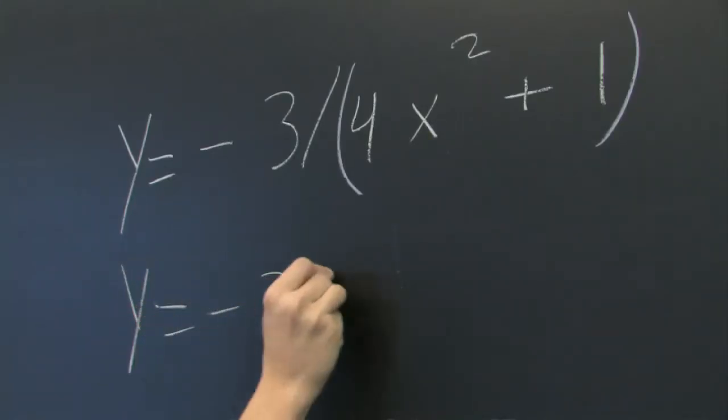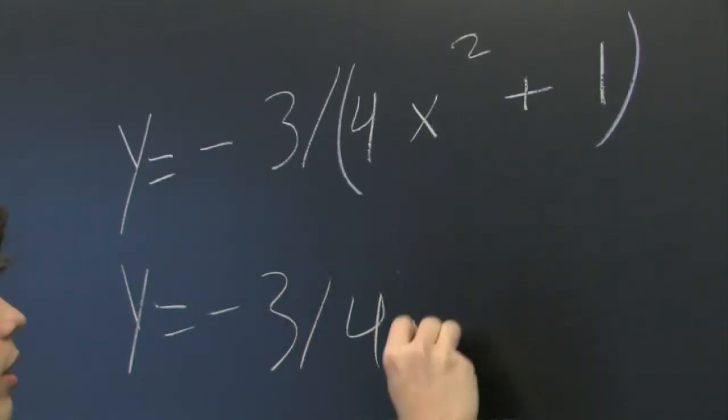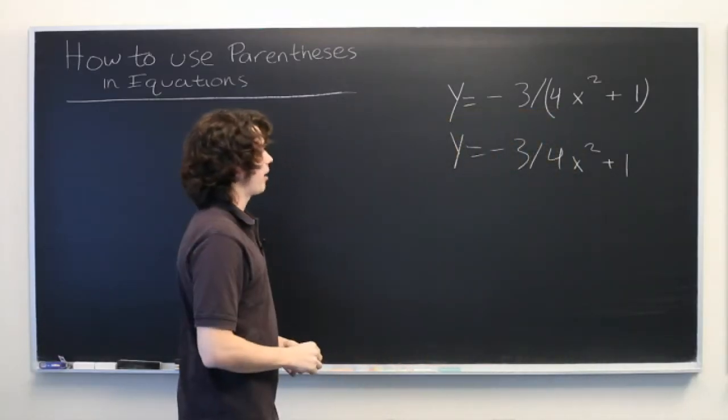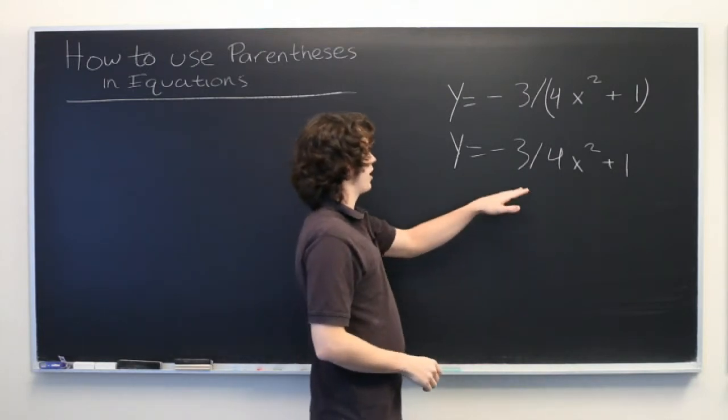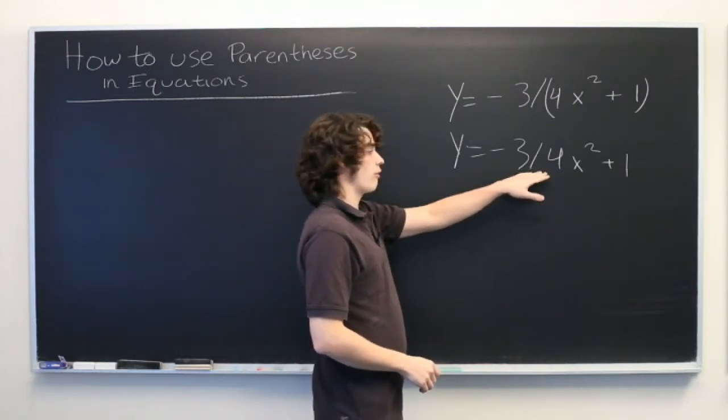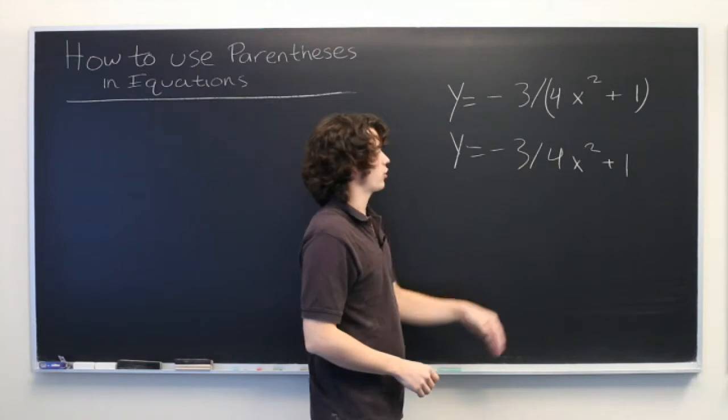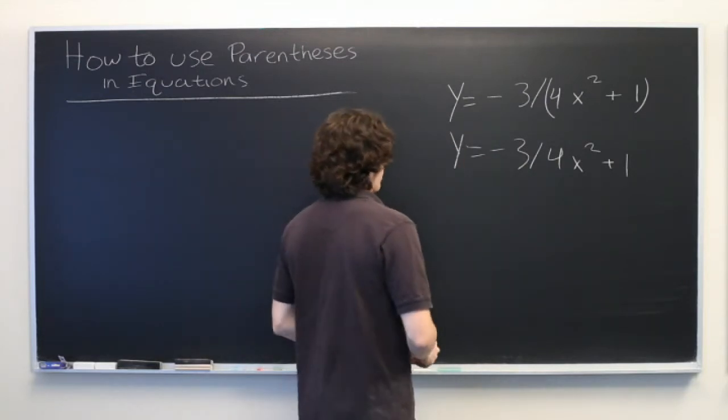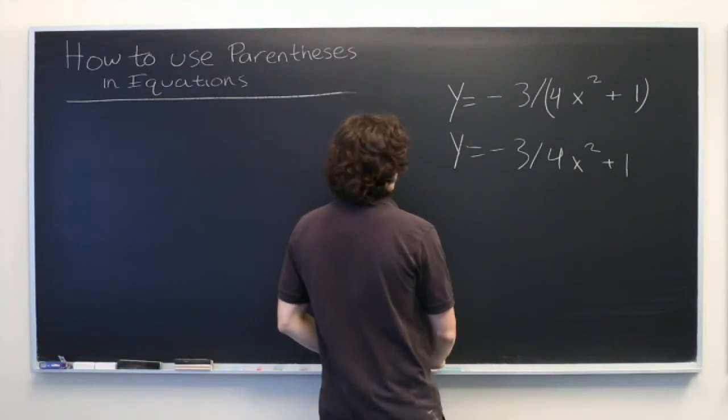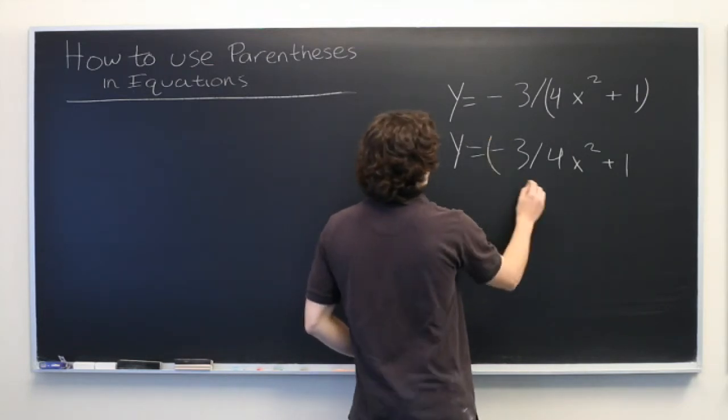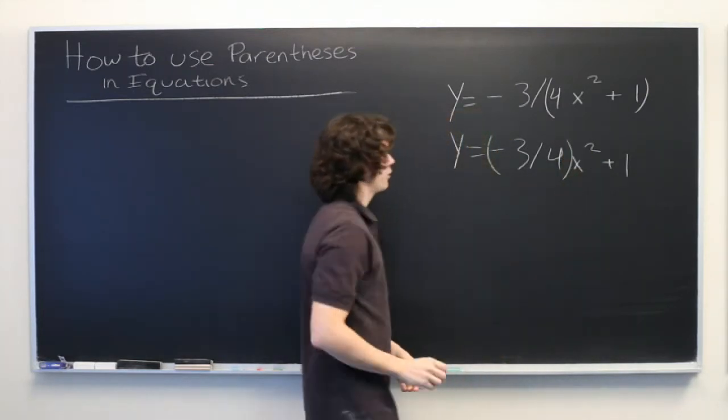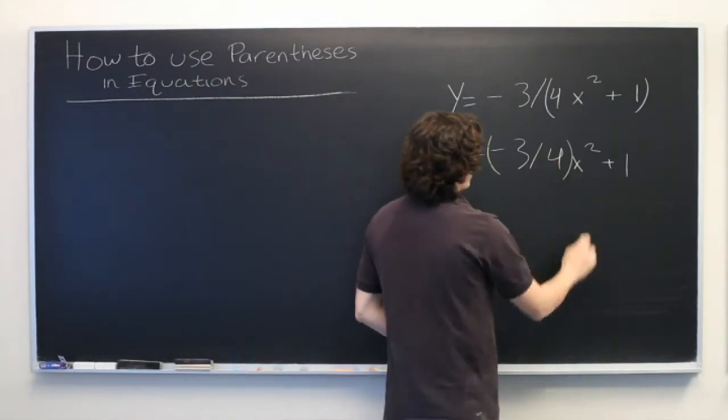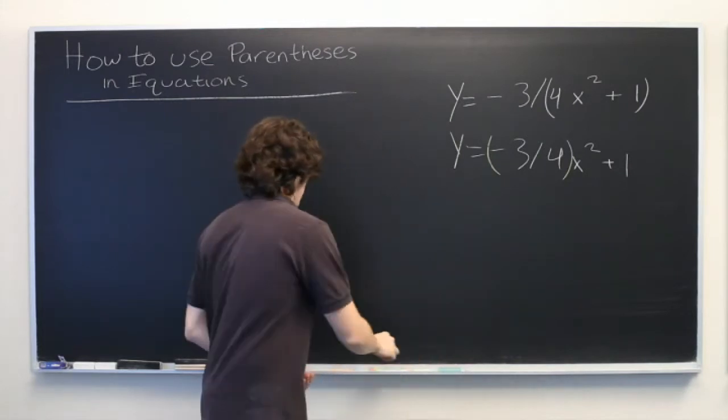We'll write it again, try to come up with other interpretations for it. Let's say that this time, what we know ahead of time is that negative 3 over 4 is a coefficient for x squared. That x squared is not in the denominator. Well, we can make that clear by simply putting parentheses around the coefficient to avoid implying that this division sign applies to the x squared. Easy enough.